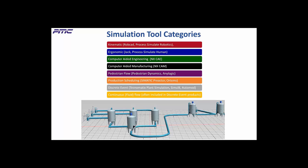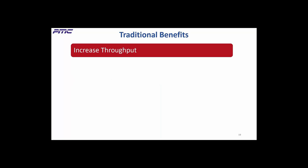Continuous flow simulation models the flow of fluids through pipes, tanks, portioners, etc., and is often included in discrete event products. Models can be purely fluids, purely discrete event, or a mix of tool types. The value of continuous simulation is the same as discrete event simulation. Our next topic covers the traditional discrete event benefits that have been available for years; they'll be covered quickly so we can concentrate on the newer features.